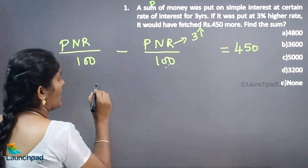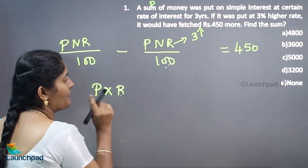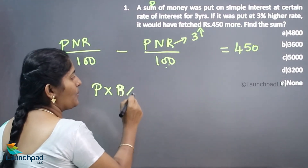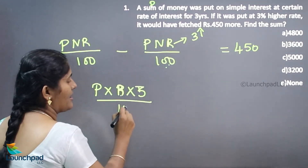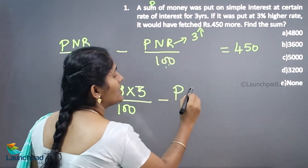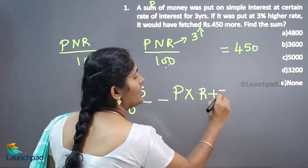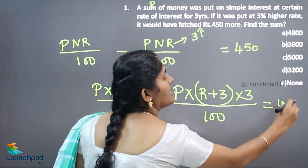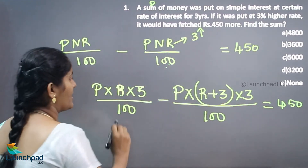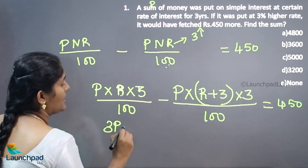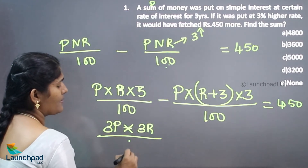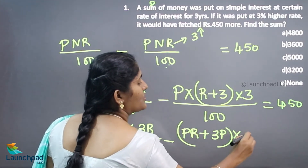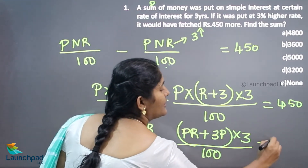Expanding now: P, number of years is three, rate of interest we don't know — divided by 100, minus P, rate of interest R plus three, number of years is three — divided by 100. The difference between these two SI calculations will be equivalent to 450. So: 3PR divided by 100 minus P(R + 3) times 3 divided by 100, which is equivalent to 450.